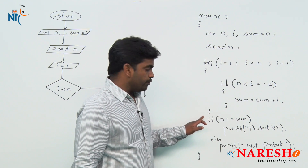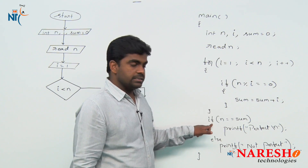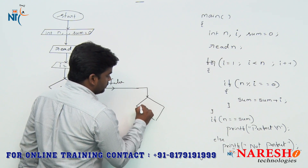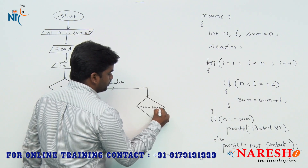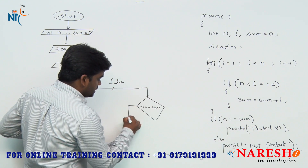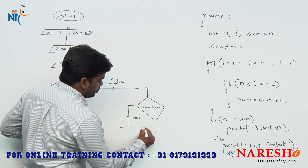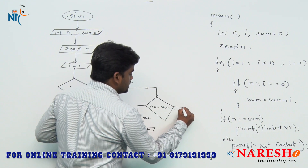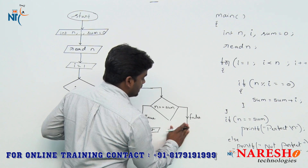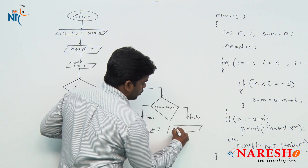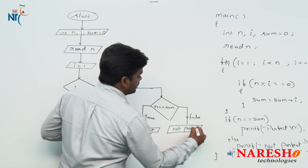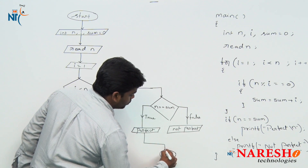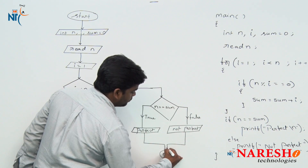Then it will check the if block and else block. We need to write the flow for the if-else block: check one more condition — if N equals sum. If this condition is true, we are printing 'perfect number'. If this condition is false, we are printing 'not a perfect number'. After printing either perfect or not perfect, the control comes to End.